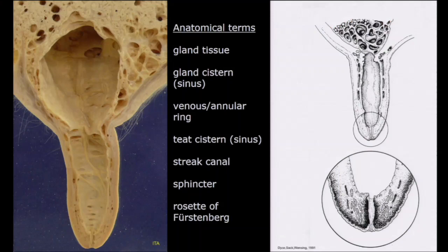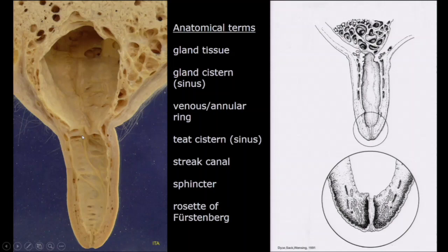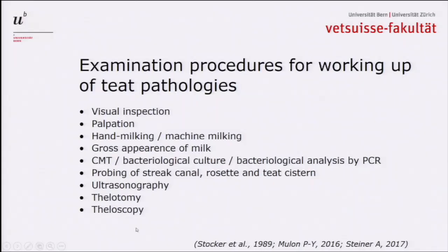I just want to repeat the anatomical terms I'm going to use during my presentation. I will talk about the gland tissue, the gland sinus, the venous ring or venous ring of Furstenberg or annular ring that delineates the gland sinus distally. Then we have the teeth sinus and, very important, the rosette of Furstenberg — it's the inner opening of the streak canal. Around the streak canal, we have the streak canal sphincter consisting of various bundles of smooth muscles. It's a very simple anatomy.